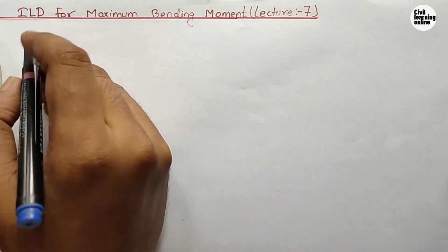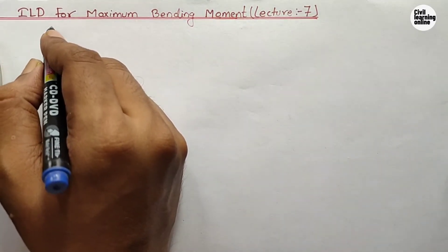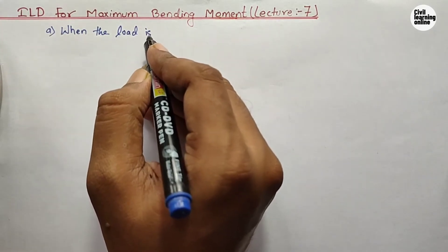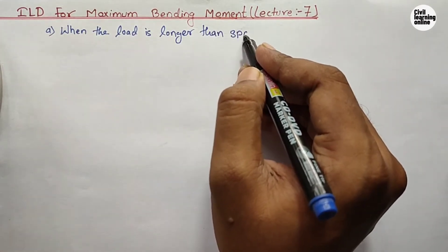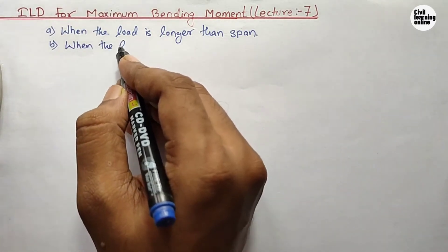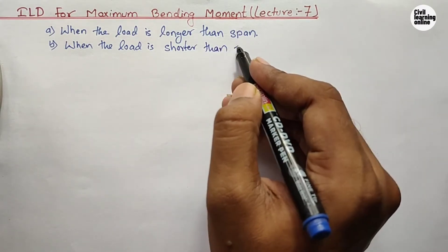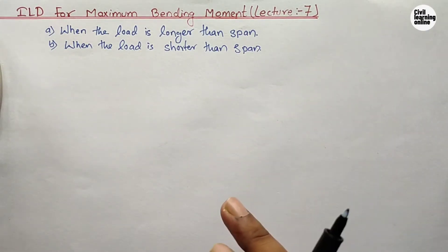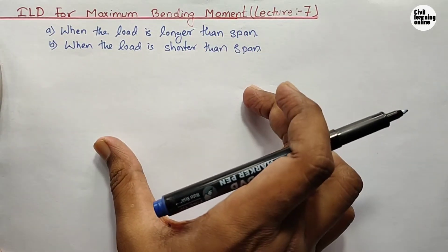As mentioned, there are two cases for the influence line diagram with UDL. The first case is when the load is longer than the span of the girder, and the second is when the load is shorter than the span. I'll discuss both cases one by one with suitable examples. First, let's discuss how to draw the influence line diagram when the load is longer than the span — concept first, then an example.